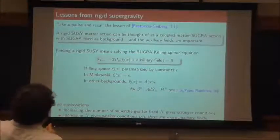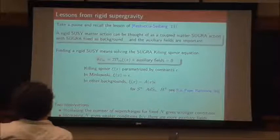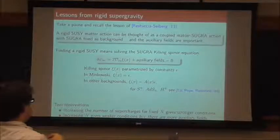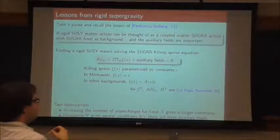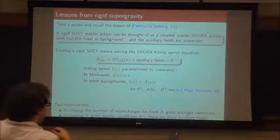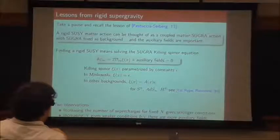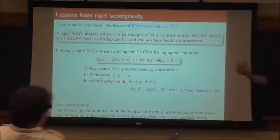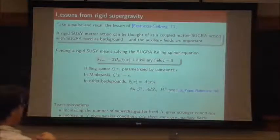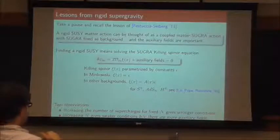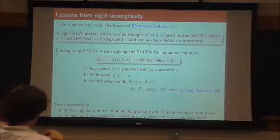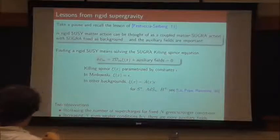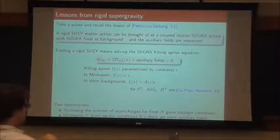What you actually find is that increasing N tends to give you weaker conditions, because there's just more freedom. In fact, what I'm going to show during the course of this talk is that if I take 8 supercharges for N=2, I actually have a richer structure than 4 supercharges for N=1. Which might seem completely bonkers, but it's precisely because the auxiliary field structure becomes more complicated.